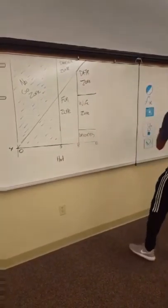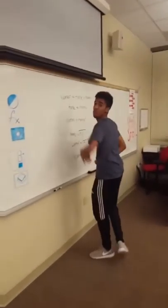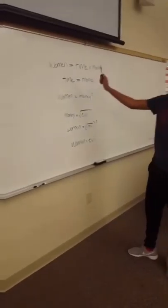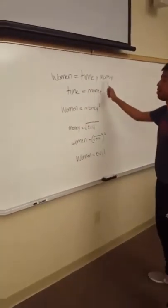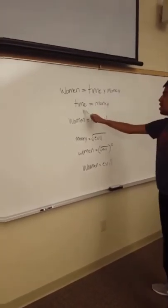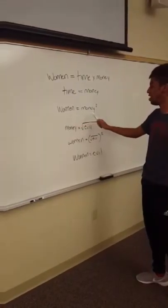Okay so now we're going to move on to math. Alright a little math problem for you guys see why women are evil. Alright here you see women equal time times money. Alright time equals money money squared.